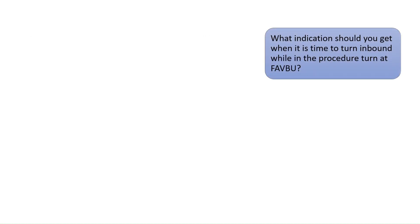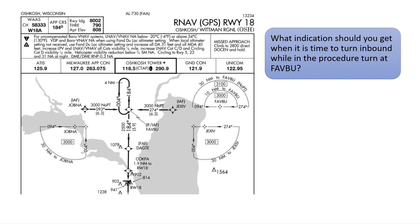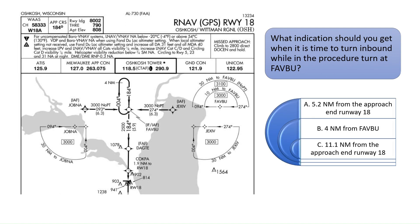What indication should you get when it is time to turn inbound while in the procedure turn at FAVBU? The outbound course for the procedure turn at FAVBU is 004 and the inbound course is 184 as shown. A pilot would be 4 nautical miles from FAVBU when it is time to turn inbound on the procedure turn, as shown in the chart by the arrow. The correct answer is B.